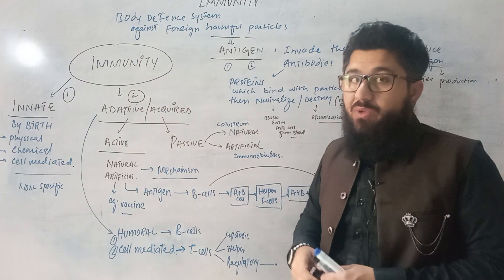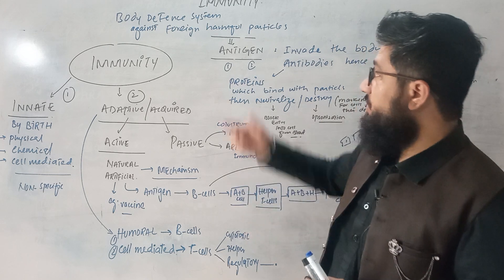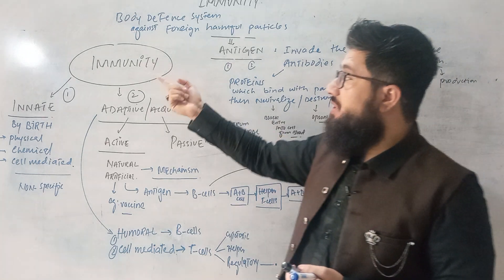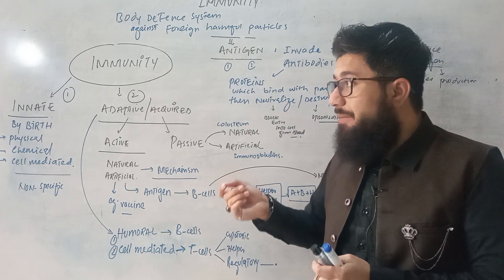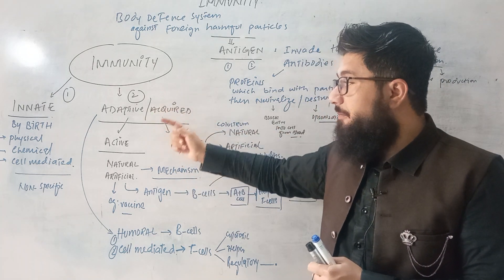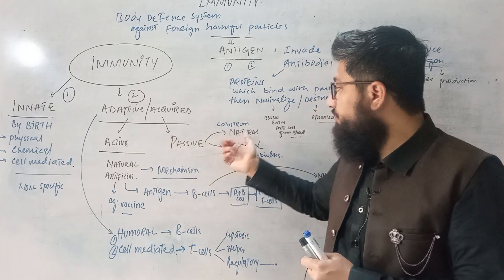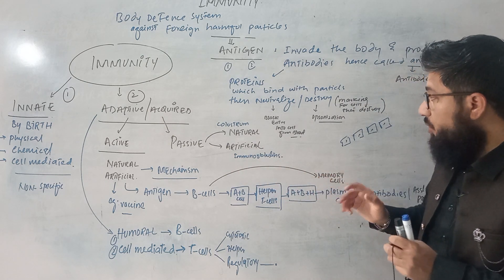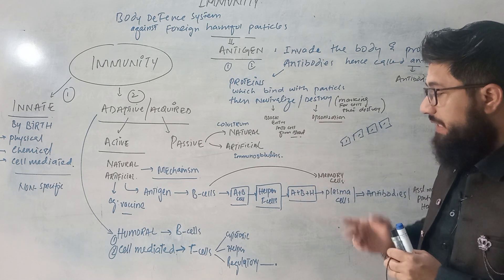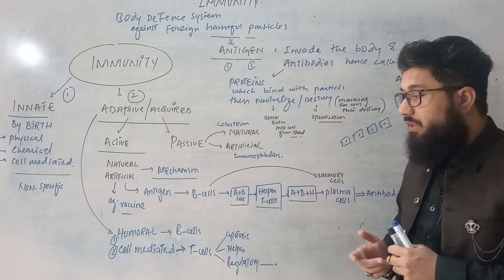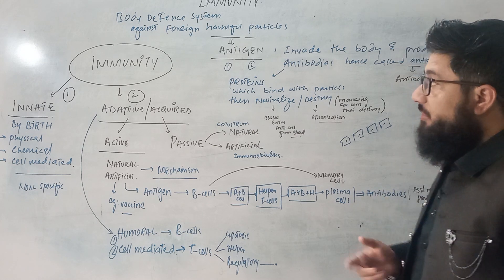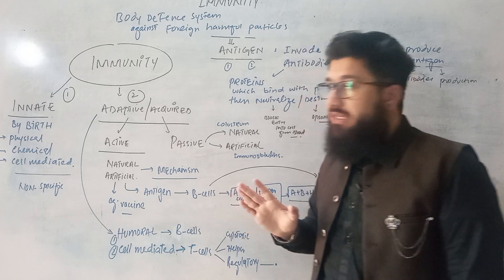First of all, I will define immunity in simple words. Then I will talk about antigens and antibodies. Then we will talk about immunity types: innate immunity, adaptive or acquired immunity — active, passive — along with natural and artificial subtypes. We will also talk about opsonization, neutralization, memory cells, B cells, helper T cells, T cells, cell-mediated immunity, humoral immunity, specific and non-specific immunity, and more.